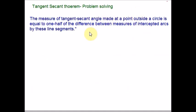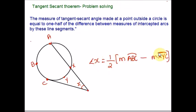Here is the second theorem. The measure of a tangent secant angle made at the point outside a circle is equal to one half of the difference between measures of intercepted arcs by these line segments. The angle is half times the difference between the major and minor arc. Hope you are clear with this theorem. Now let us see some solved problems.